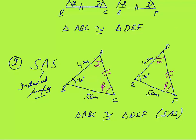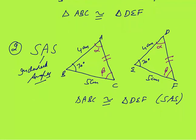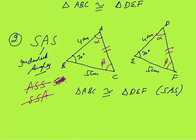The angle must be an included angle. ASS is wrong and SSA is also wrong. Only SAS — side, angle, side — is valid, where the angle lies between the two sides.